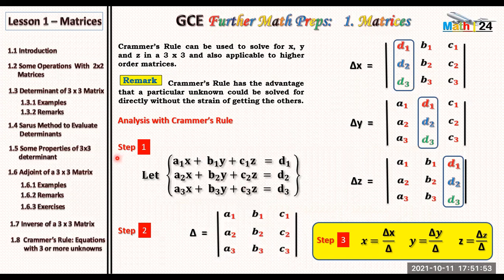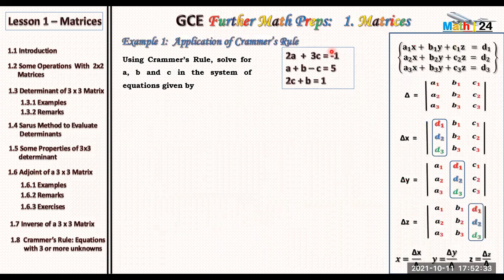With Cramer's Rule: step one, write down the three by three or higher order matrix in this form. Step two, look for the determinant of the coefficient matrix and the sub-determinants — delta x, delta y, delta z — obtained by replacing respectively the first, second, and third columns. Step three, x is delta x over delta, y is delta y over delta, and z is delta z over delta. Let us take an example to illustrate this concept.